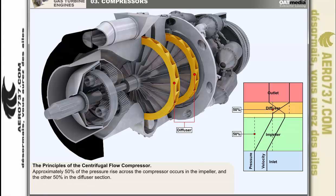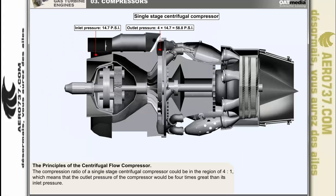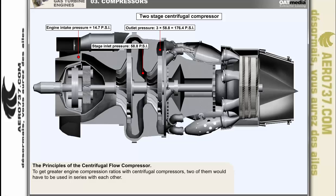As you can see from the graph, in practice approximately 50% of the pressure rise across the compressor occurs in the impeller and the other 50% in the diffuser section. The compression ratio of a very efficient single-stage centrifugal compressor would be in the region of 4 to 1, meaning that the outlet pressure would be 4 times greater than its inlet pressure. To attain greater compression ratios using centrifugal compressors, two of them would have to be used in series with each other.